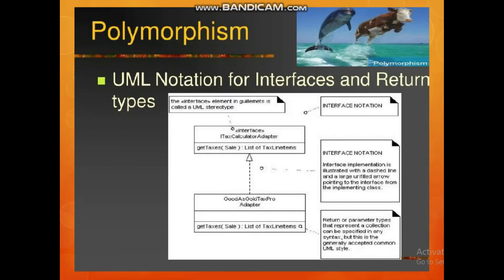Next is UML notation for interfaces and return types. The interface notation uses a double rounded shape. Interface implementation is illustrated with a dashed line and a large unfilled arrow pointing to the interface from the implementing class.